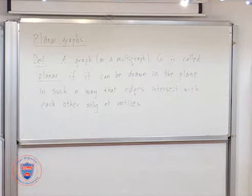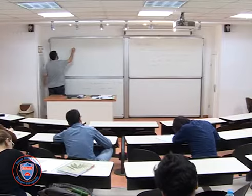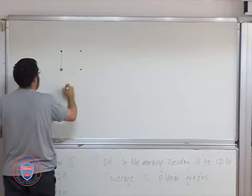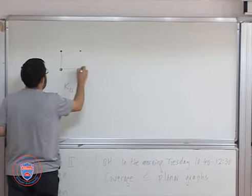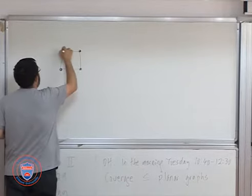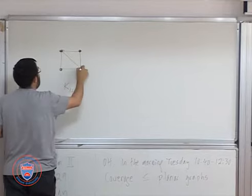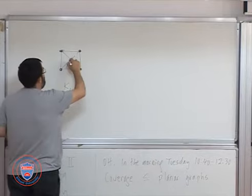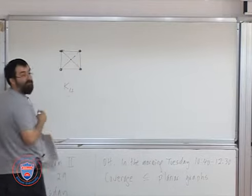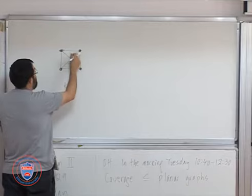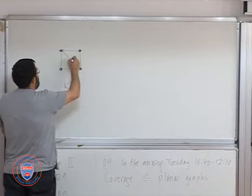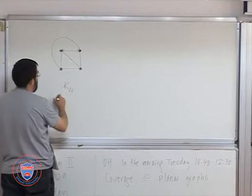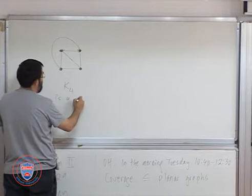So for example, if you're trying to draw a complete graph with four vertices, we used to just say this is the graph. But now you're not allowed to do this point because this is not a vertex. So to draw this in a planar way, you have to do this. So K4 is a planar graph.